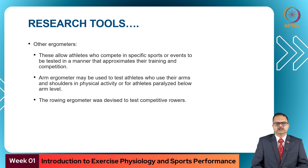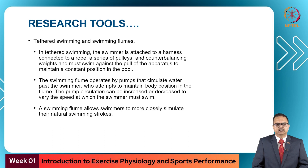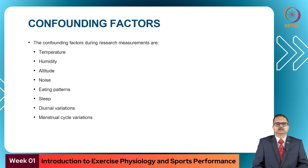Other ergometers allow athletes competing in specific sports to be tested in a manner that approximates their training and competition. An arm ergometer can be used for upper limb athletes or people paralyzed below the waist. The rowing ergometer can be used to test competitive rowers. For swimmers, we can use tethered swimming or swimming flumes. In tethered swimming, the swimmer is attached to a harness connected to a rope, pulleys, and weights, and must swim against the pull of the apparatus to maintain a constant position in the pool. The swimming flume is operated by pumps which circulate water past the swimmer; the pump circulation can be increased or decreased to vary the speed, and it allows the swimmer to more closely simulate their natural swimming strokes.